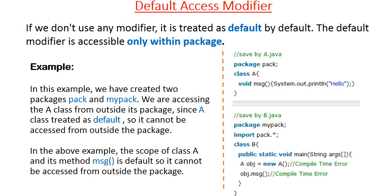Next is the default access modifier. If we don't use any modifier — that is, we declare a variable or method without specifying any modifier — then it is treated as a default modifier. The default modifier is accessible only within a package. Within a package there can be more than one class, and all those classes can access a default variable or default method.